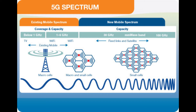Additional mobile spectrum above 6 GHz, including the 26 to 28 GHz bands — often referred to as millimeter wave — will provide significantly more capacity compared to current mobile technologies. The additional spectrum and greater capacity will enable more users, more data, and faster connections.